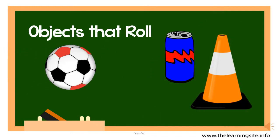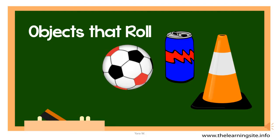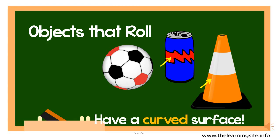Now look at those objects that roll. All of them can go round and round if you place them on their curved surface. A ball will always roll. A can of soda will roll if you place it on its side, and a cone will roll around itself. Now, all curved surfaces can roll.